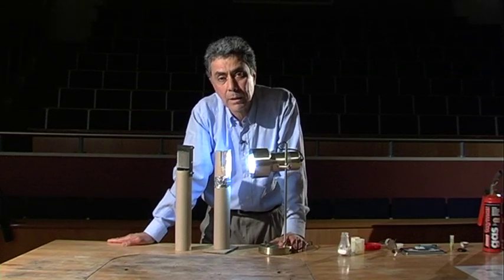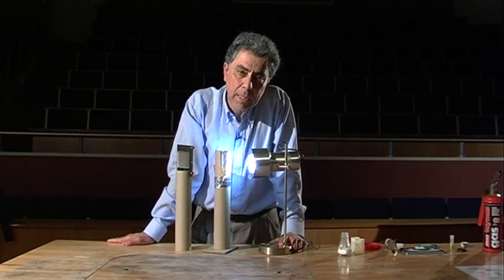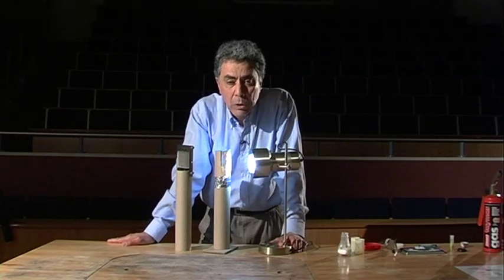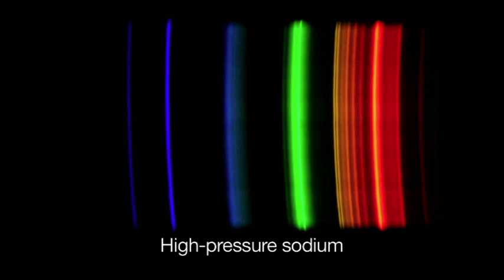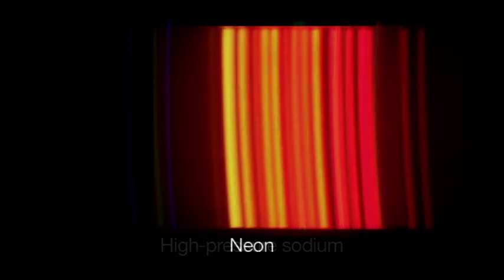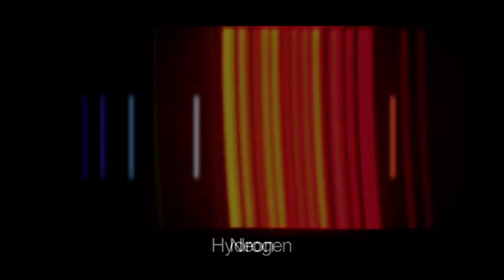And in fact, scientists have found that every single chemical element has its own unique pattern of color lines. You can see this more clearly in these images taken with high quality spectroscopes.